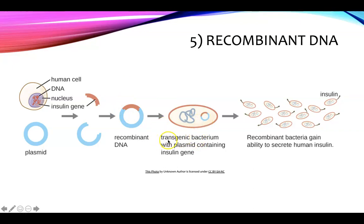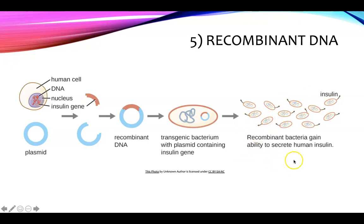The bacterium can now be called transgenic because it has a new gene in one of its loops of DNA called the plasmid. The plasmid now has the gene coding for insulin production. You cause those bacteria to multiply many, many times, and now they secrete human insulin, which can be purified and packaged to treat people with diabetes mellitus.